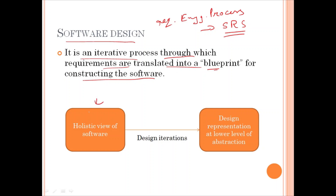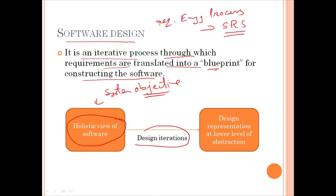Initially, the blueprint represents a holistic view of the software — that is, design is represented at a higher level of abstraction, meaning it is directly traced to the system objectives. As design iterations occur, we refine it subsequently, and it leads to design representation at the lower level of abstraction, meaning how to implement and how to construct the software. The entire process is an iterative one.